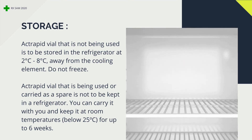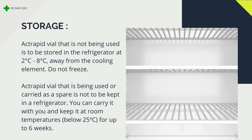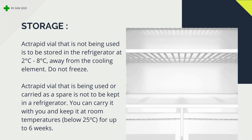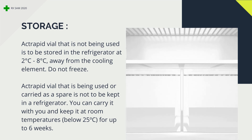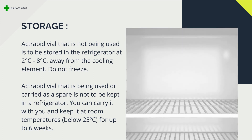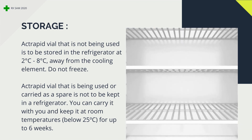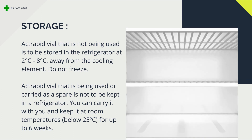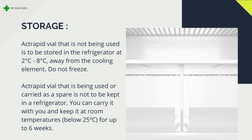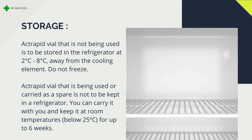A rapid vial that is not being used is to be stored in the refrigerator at two to eight degrees Celsius, away from the cooling element — do not freeze. A rapid vial that is being used or carried as a spare is not to be kept in a refrigerator; you can carry it with you and keep it at room temperatures below 25 degrees Celsius for up to six weeks.